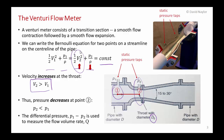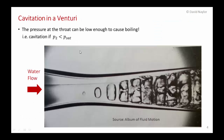You'll notice in the diagrams that there are static pressure taps for making those pressure measurements. Now it might seem counterintuitive that the pressure at two is lower than at one, but the pressure can get so low in the throat that it can cause local boiling. This is a picture of water flowing through a Venturi where the velocity has been increased to the point where the pressure at the throat is less than the saturation pressure, causing cavitation.